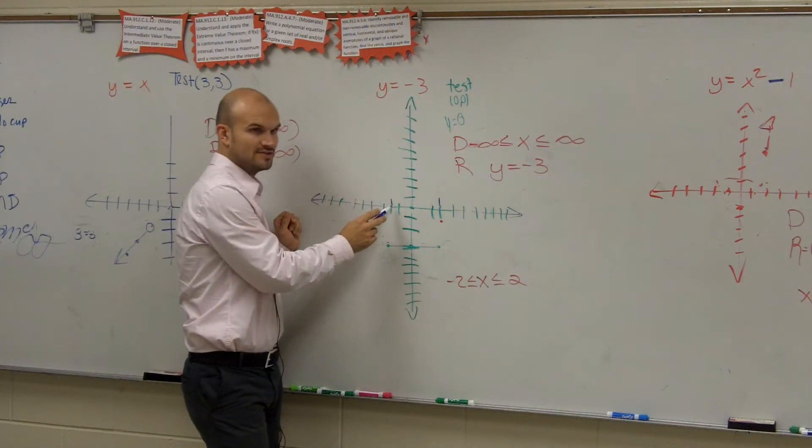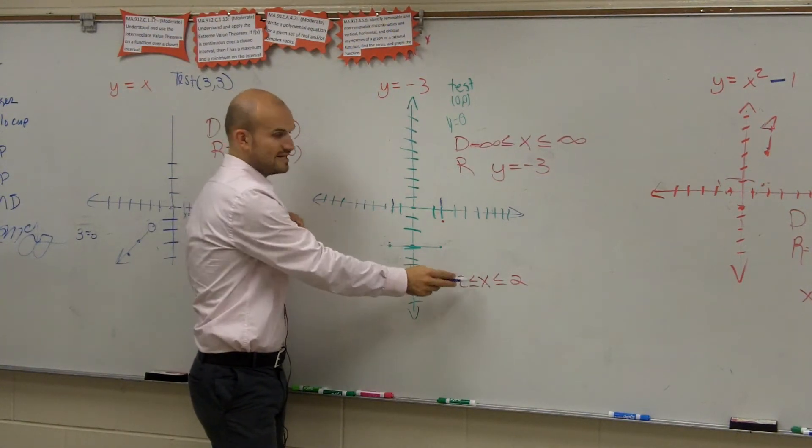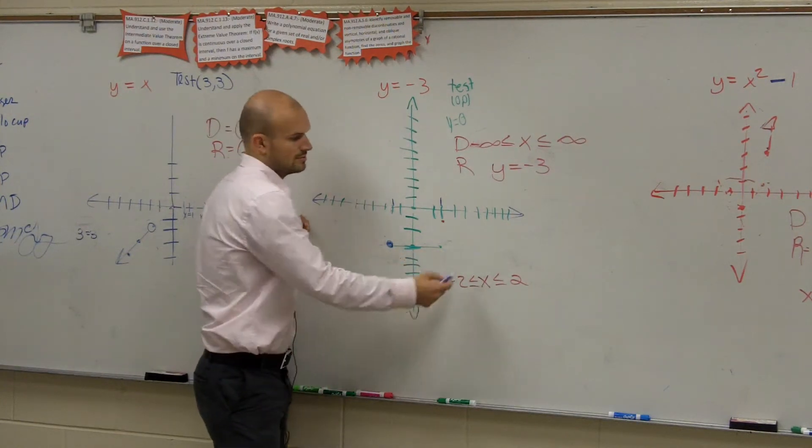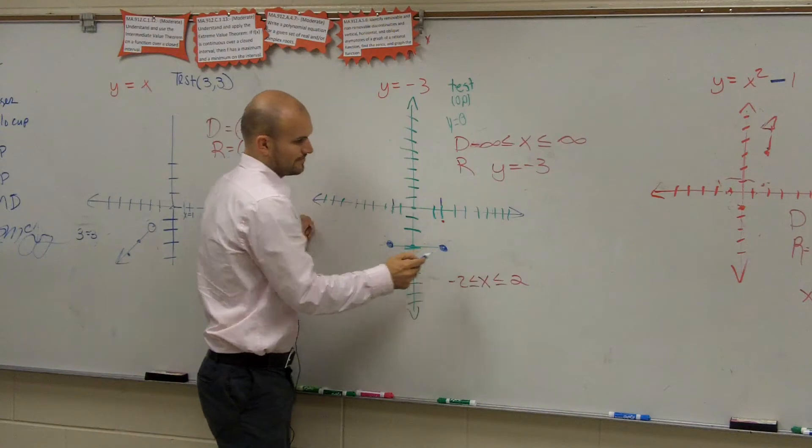Does x include negative 2? Yes. It's equal to, right? So we're going to do a nice big dot. It doesn't include 2. OK?